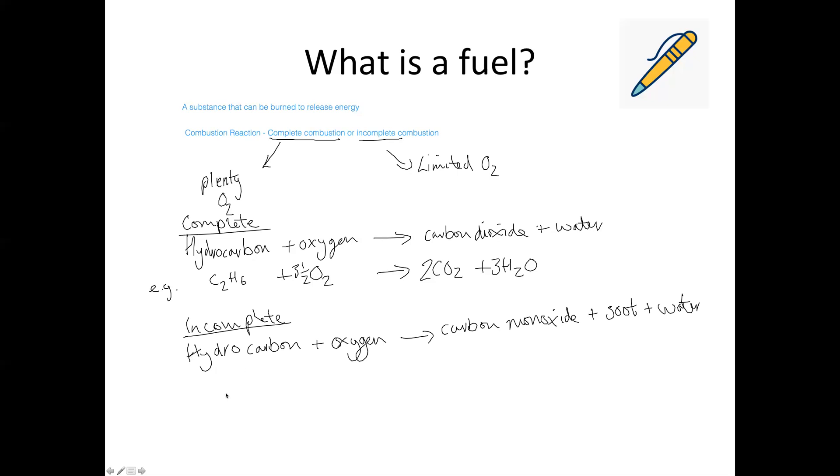So another example, if we take the ethane again, C2H6 plus O2 giving you CO plus carbon soot plus H2O. You can add state symbols to this as well if you wish. So the carbon is a solid, that's a gas, that's a liquid, that's a gas, and that will also be a gas.